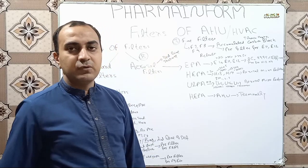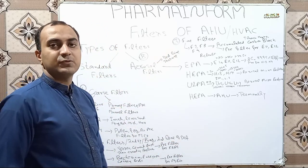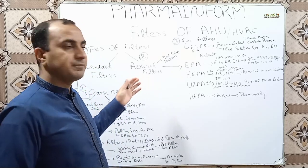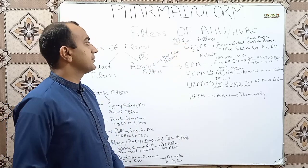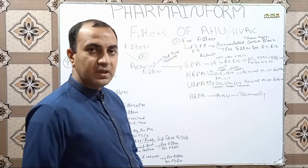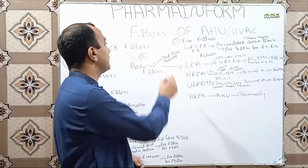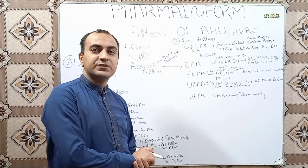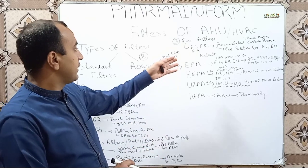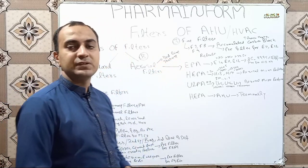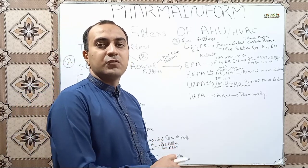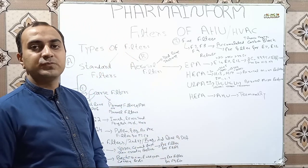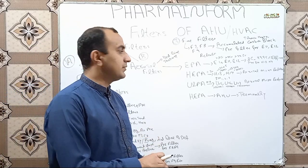That covers all standard filters — we have discussed three types: coarse filters, medium filters, and fine filters, also known as pre-filters, bag filters, and fine filters. The next class is aerosol filters. Aerosol filters are known as third line of defense filters or main filters, also known as tertiary filters. These are the most critical filters, which filter very small particles and microbes to protect clean rooms or environments where they are used.